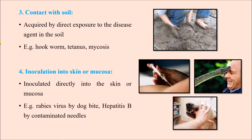Next is contact with soil. Whenever a person comes in contact with soil, there can be direct exposure to the disease agent in the soil. The best examples are hookworm infestation, tetanus, and mycoses. Tetanus spores can be present in the soil, or hookworm ova can be present in the soil, and we get infected by the toxin or the ova.